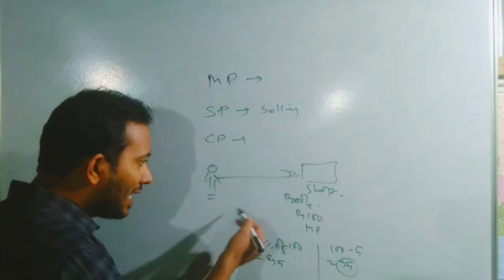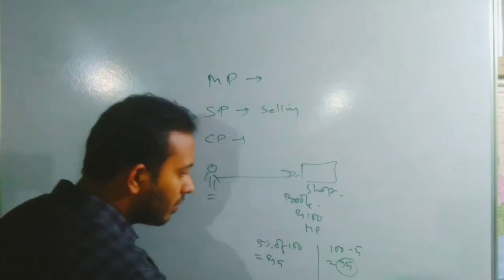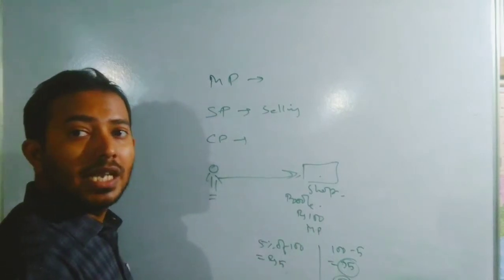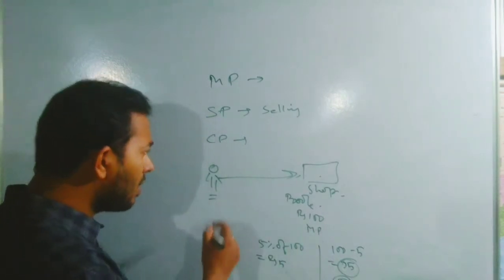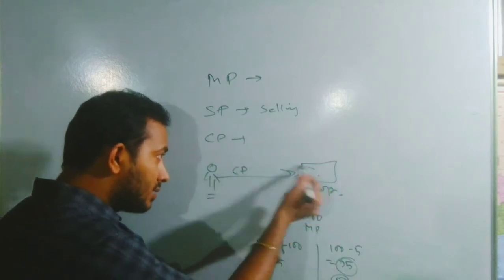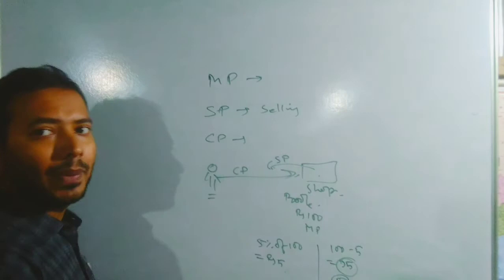That means we are getting this one as what? For us it will be 95. And for the particular shopkeeper it will be the selling price. Remember for us it will be cost price and for seller it will be selling price.